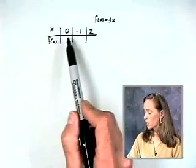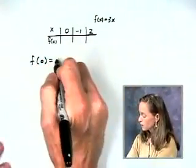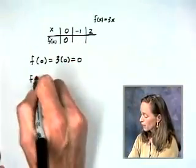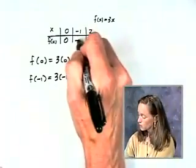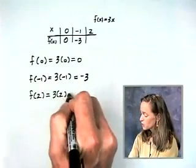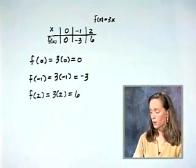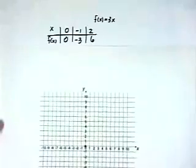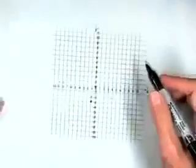In our table, let's use 0 for x, then negative 1, then 2. Starting with 0, f of 0 equals 3 times 0, which is 0. Using negative 1 for x, f of negative 1 is 3 times negative 1, which is negative 3. Using 2 for x, f of 2 is 3 times 2, which is 6. I have three ordered pairs to plot, and I can draw the line.